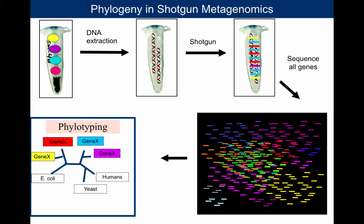Ribosomal RNA is imperfect for other reasons too. One is that we'd like to predict functions in communities, and ribosomal RNA is not perfect for that. So many people have turned to going to environmental samples and instead of doing PCR, sequencing random genomic data extracted out of the community — so-called metagenomic data. You can do the same type of phylotyping analysis with this random data, and it's probably better than PCR amplification data because there's no PCR bias, and you can analyze genes that don't vary in copy number between taxa.